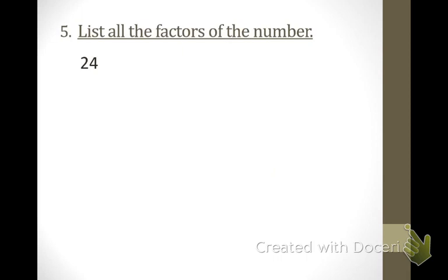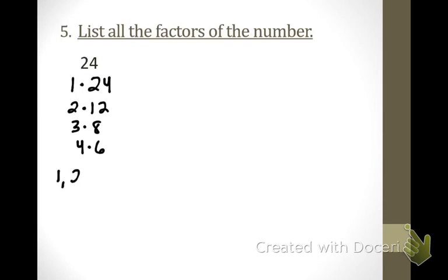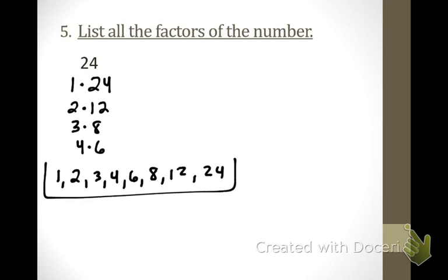Number 5 asks us to list all the factors of the number 24. We got: 1 times 24, 2 times 12, 3 times 8, 4 times 6 — and 5 times nothing, so that's it. Remember, in order to list all the factors you need to put them in order from least to greatest. Those are all the factors of 24.